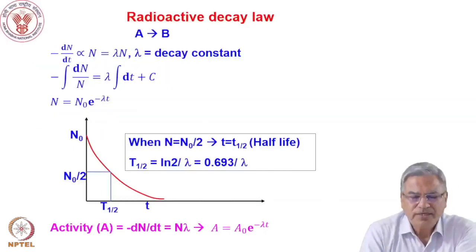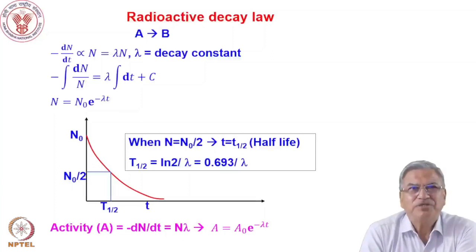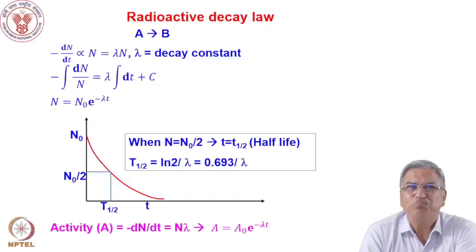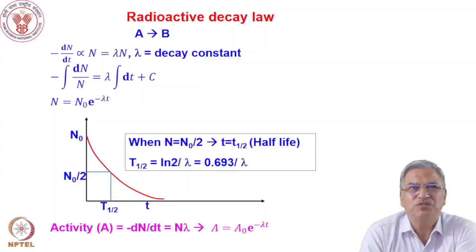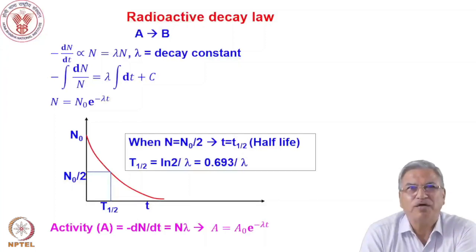Let us discuss first the radioactive decay law. We take an example of a radioisotope A undergoing some decay — it could be alpha, beta, or gamma — to B. A is called the parent and B is called the daughter. Henceforth, parent means the isotope which is decaying, and whatever is formed we call the daughter.